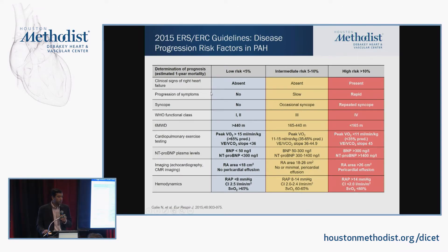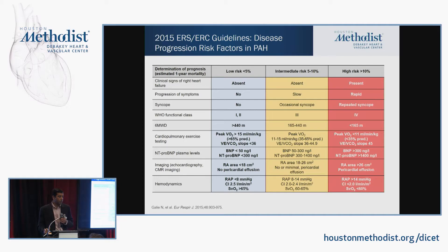For risk stratification in PAH, there are two schemas — the ESC/ERS guidelines and the REVEAL risk score, which is used more in North America. All of these look at features of RV dysfunction. If you have signs and symptoms of RV dysfunction including pericardial effusion, poor six-minute walk, and syncope, you are at high risk and should be considered for early prostacyclin therapy.